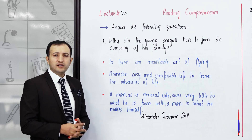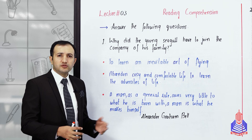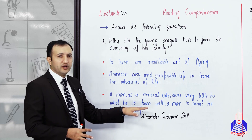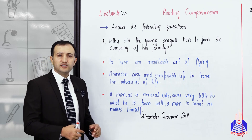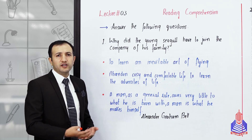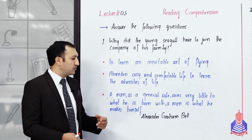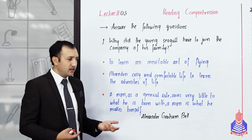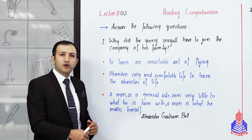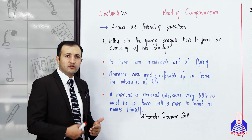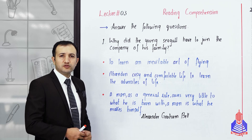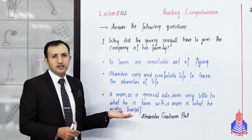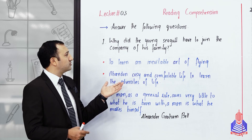You can add a relevant quotation to make your answer better. Here I have added a famous quotation by Alexander Graham Bell, the inventor of the telephone: 'A man as a general rule owes very little to what he is born with; a man is what he makes himself.' So you can use this quotation to wind up the answer to why the young seagull had to join his family.